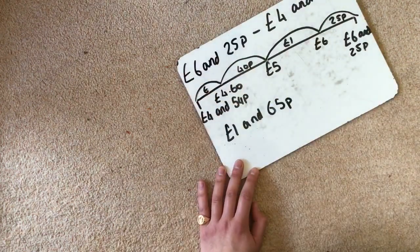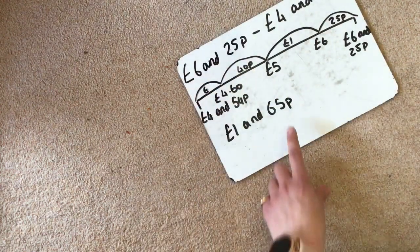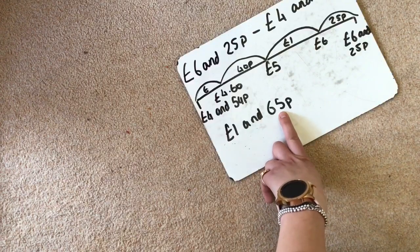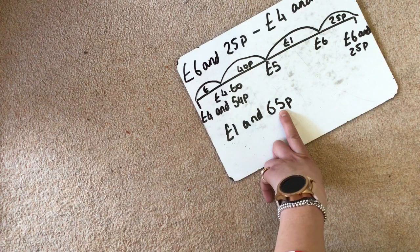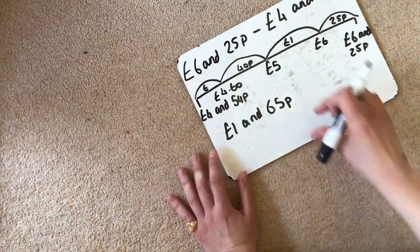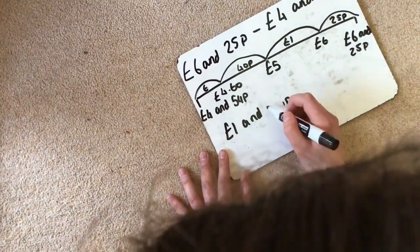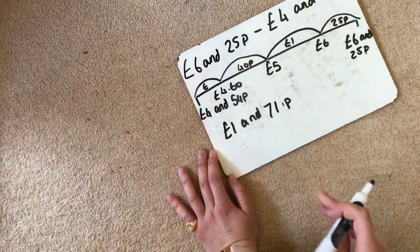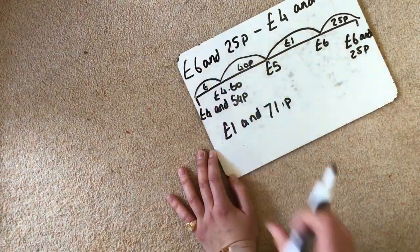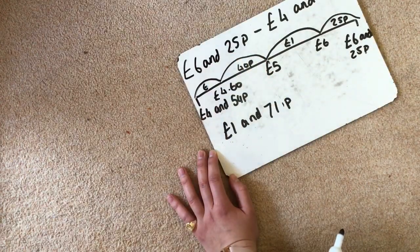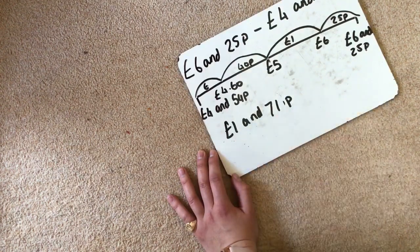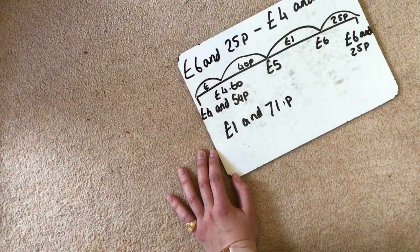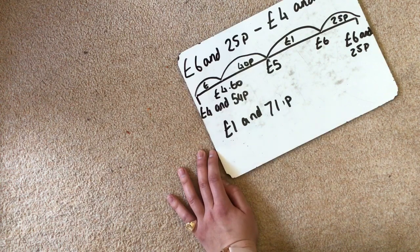I've then got 6p left. So I'm going to think about my number bonds. I know that 5 and 5 make 10. So that will take me up to 70p. And then I've got one left, so then that takes me up to 71p. So then my total is £1.71. So £6.25 take away £4.54 equals £1.71. So that is your number line method.